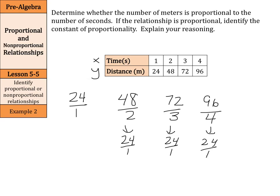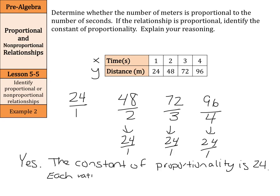Our answer here is yes, and we can say the constant of proportionality is 24. We can just take the 24 over 1 and make it 24. Our explanation is each ratio is 24.